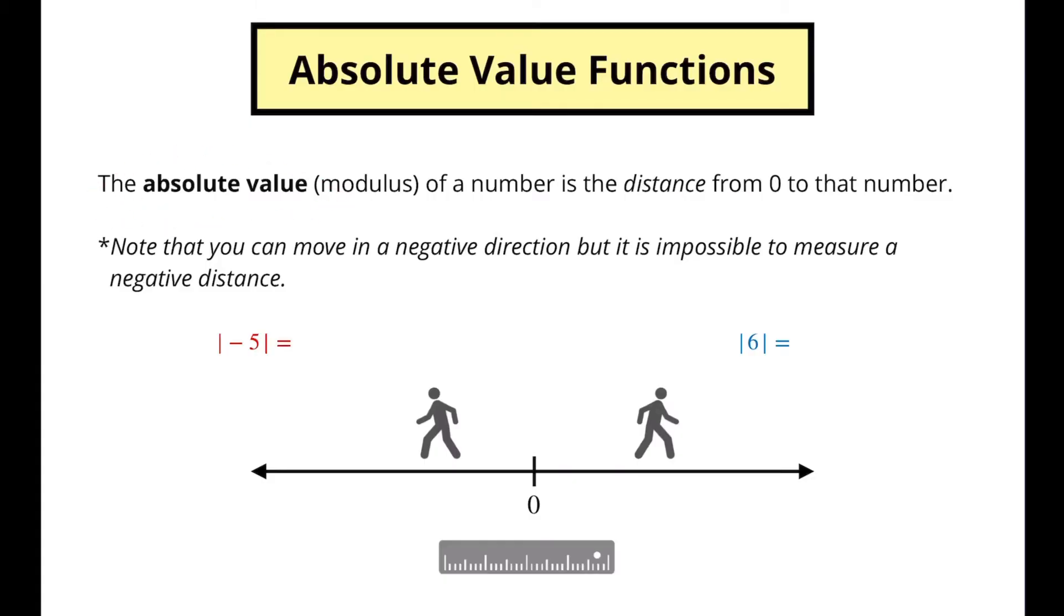The absolute value, sometimes called the modulus, is what I always used in North America. Modulus I think is more of a European phrase, but the absolute value or the modulus of a number is the distance from zero to that number. Keep in mind that of course we can move in a negative direction, but it's impossible to move in a negative distance.